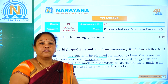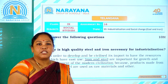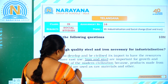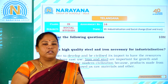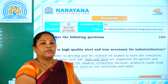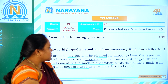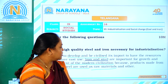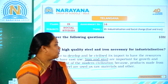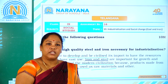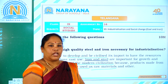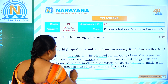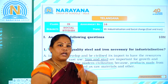Iron and steel are important for the growth and development of modern civilization because products made from iron and steel are used as raw materials and others. That is the reason why high quality steel and iron are necessary for industrialization — because the products made from iron and steel are used as raw materials.